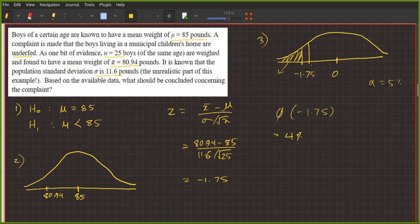H₀ is rejected and we accept the alternative. The conclusion, number 4: What should be concluded regarding the complaint? Yes, there is enough data to justify that the boys are underfed.